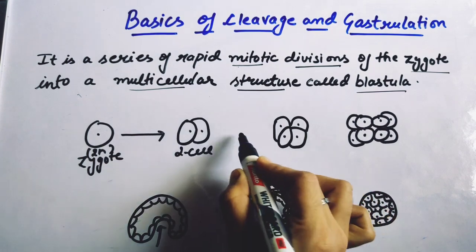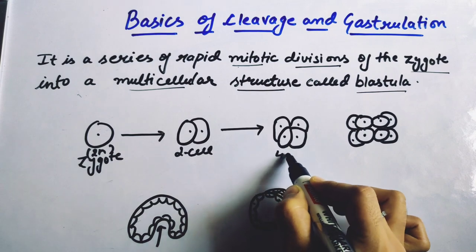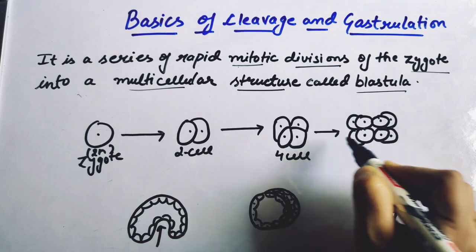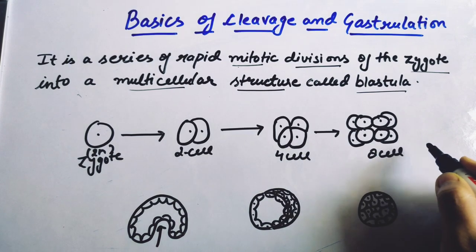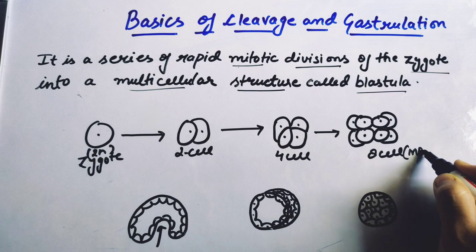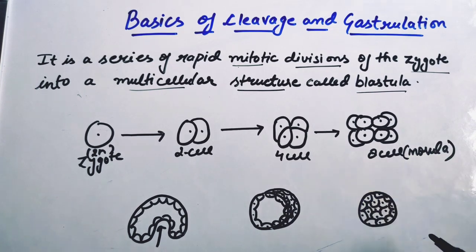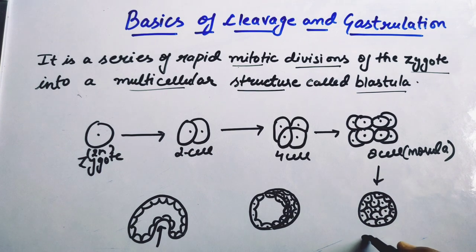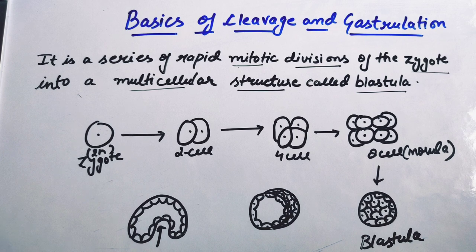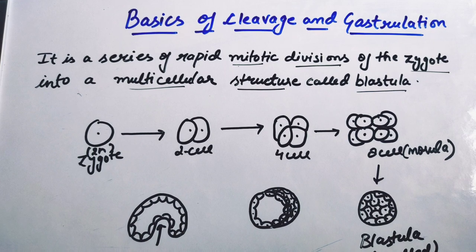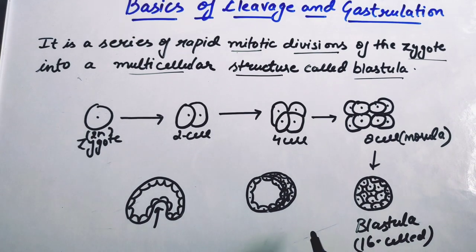We will see the two cells, then the four cells, then the eight cell stage. The 16-cell stage is called the morula. After morula we get the blastula, which is the result of cleavage.